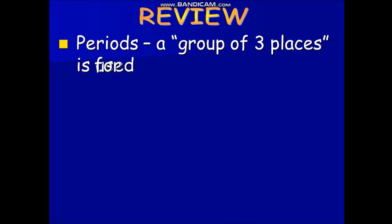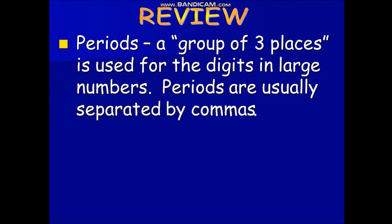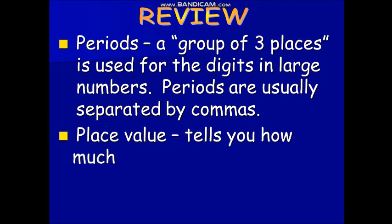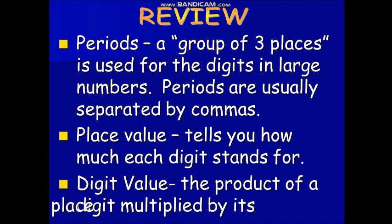So let's do a quick review. Periods: a group of three places used for the digits in large numbers, usually separated by commas. Place value tells you how much each digit stands for. Digit value: the product of a digit multiplied by its place.